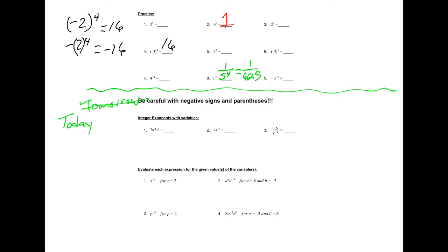Let's look at number one, 7w^4 x^0. So if we break them apart it's 7 times w to the 4th times x to the 0. So remember the exponents only affect the bases that they're touching.